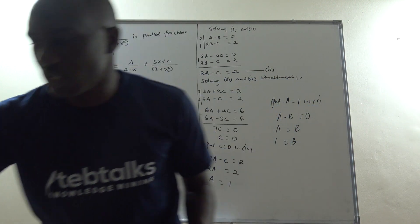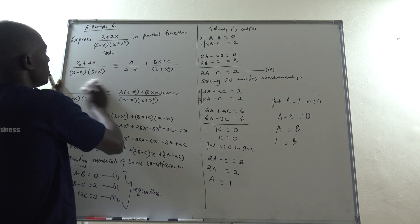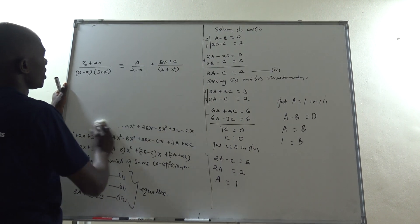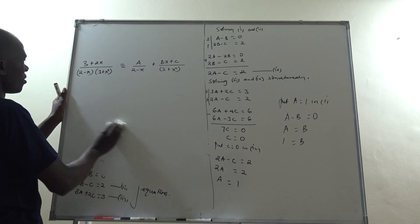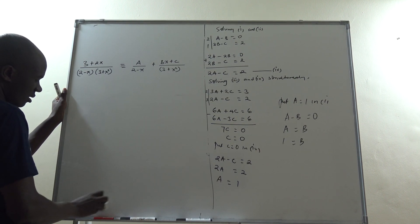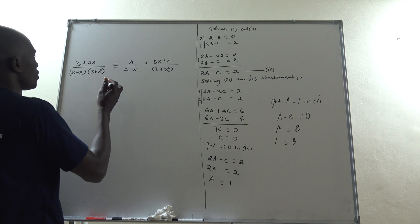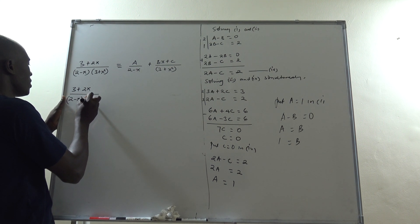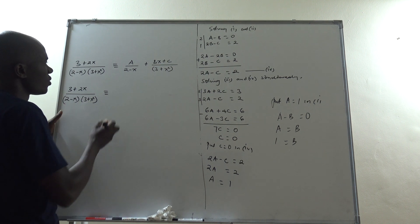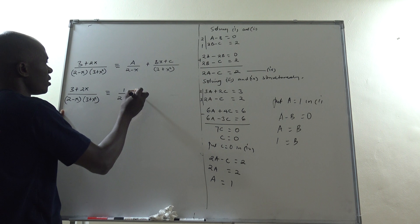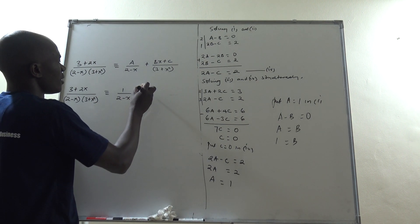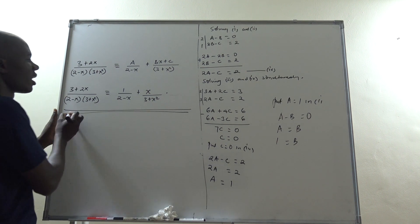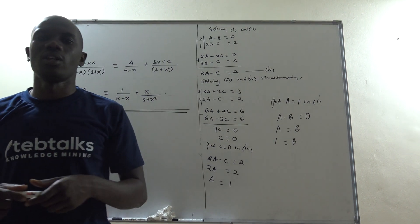Substituting back into our expression, we get (3 + 2x) / [(2 − x)(3 + x²)] = 1/(2 − x) + x/(3 + x²). This is how we express that fraction as a partial fraction decomposition.